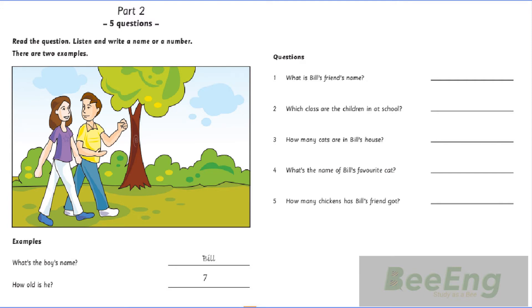Now listen to part two again. 1. Is this your friend with you? Yes, it is. What's her name? Her name's Kim. How do you spell that? K-I-M. 2. Are you in her class at school? Yes. We're in class nine. Pardon? Class nine. And the teacher is very nice.